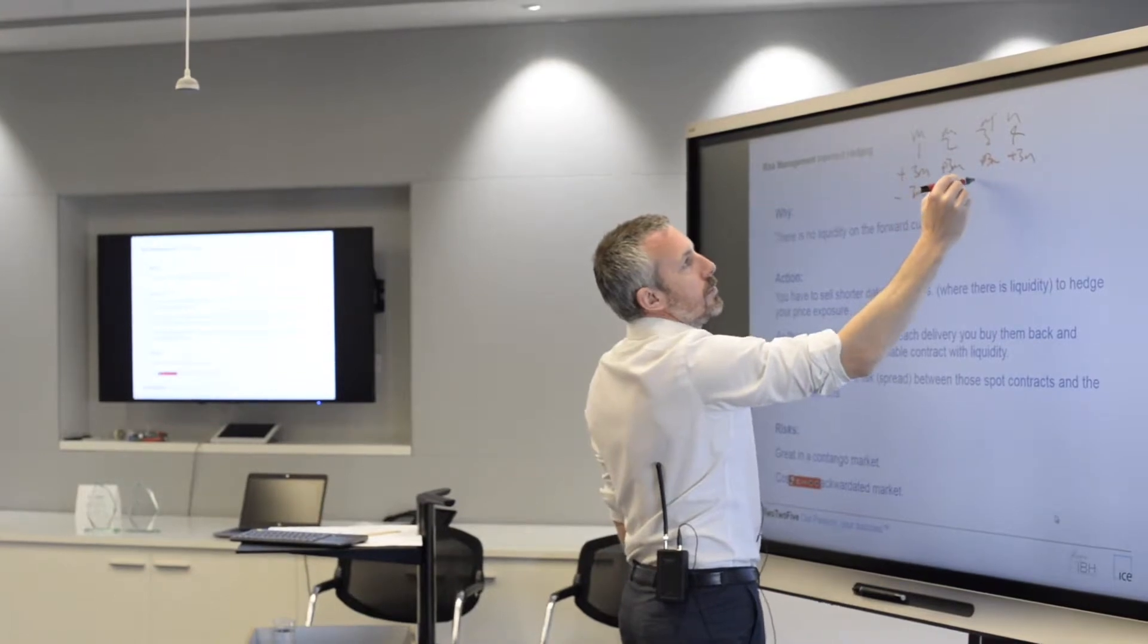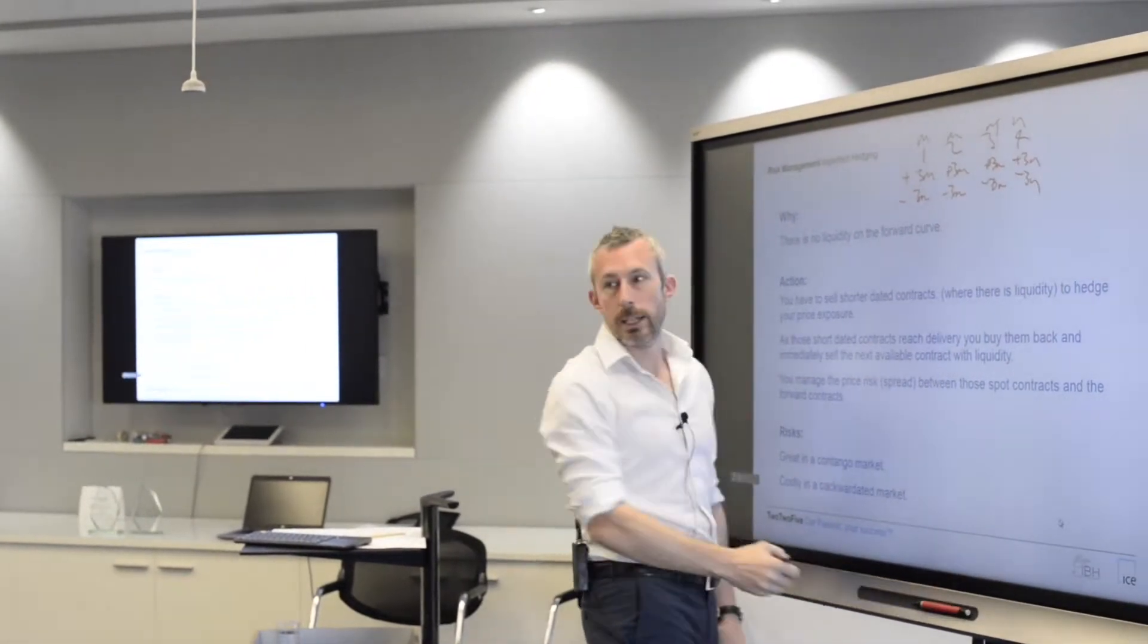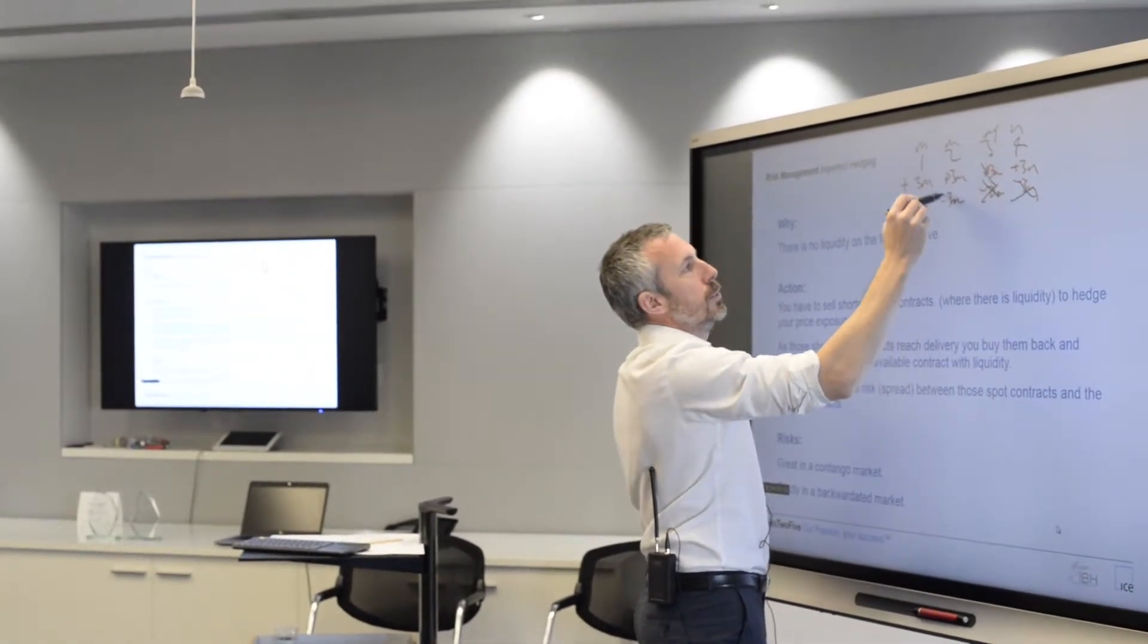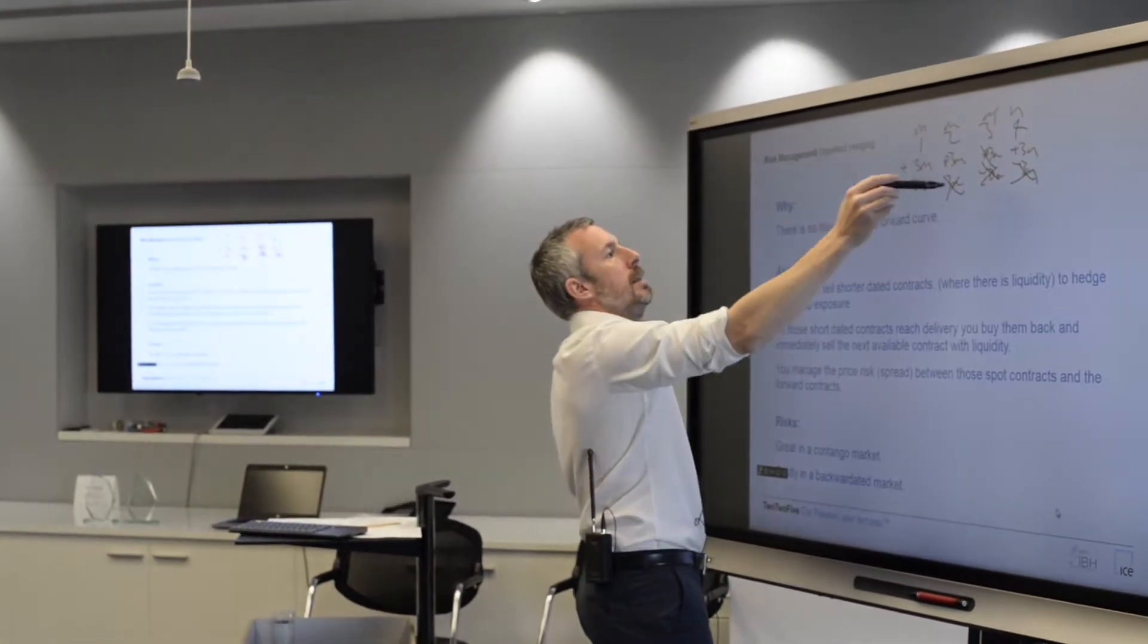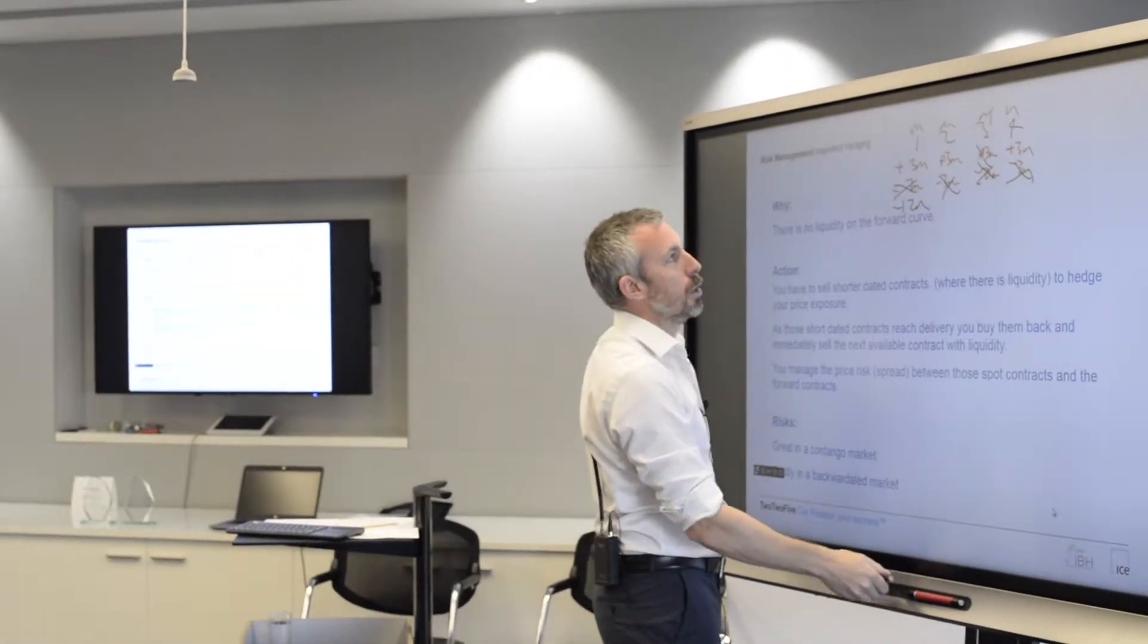Selling 3 million, selling 3 million, selling 3 million. You might not have liquidity to do these months, or these months, or this month. So you might have to sell minus 12 million here and then it's called stack and roll.